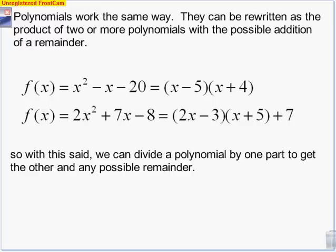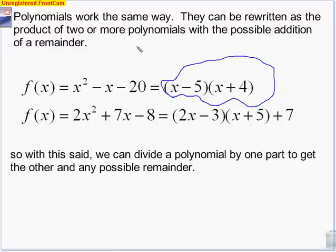Polynomials work the same way. They can be rewritten as a product of two or more polynomials with the possible addition of a remainder. For example, an easy polynomial: x² - x - 20 factors into (x - 5)(x + 4) — no remainder. If we FOIL that, it would exactly make x² - x - 20. However, a polynomial like 2x² + 7x - 8 can't be factored perfectly. It could be factored into (2x - 3)(x + 5) with an extra remainder of 7 on the end.